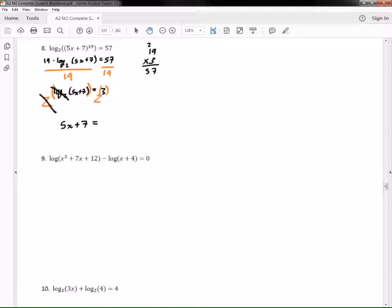And then we have to subtract 7 from both sides, so subtract 7 there, subtract 7 there, and I get 5x equals 1. And then I divide both sides by 5, I get x equals 1 over 5.